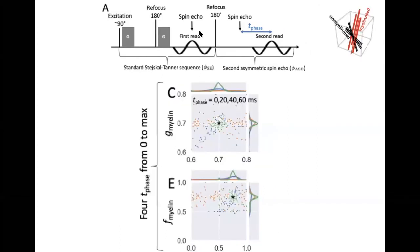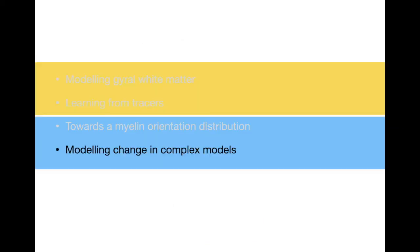You can also change the T-phase to get extra sensitivity — determining not only the G ratio, but also the fraction of myelinated versus unmyelinated fibers. Okay, so I'm coming to the end of the talk and the fourth topic, which is modeling change in complex models.